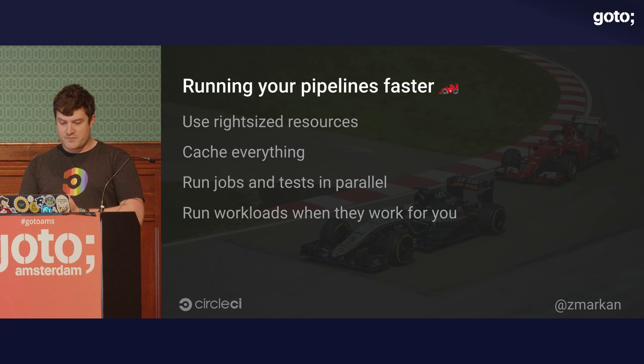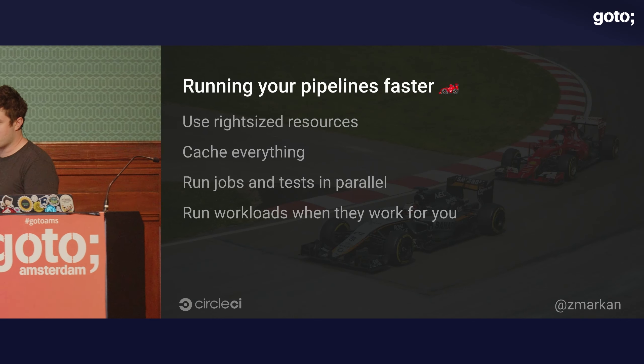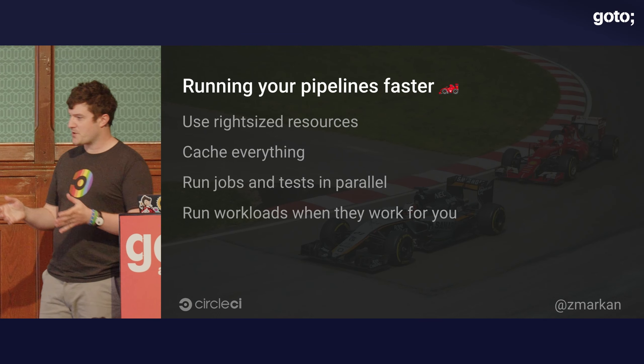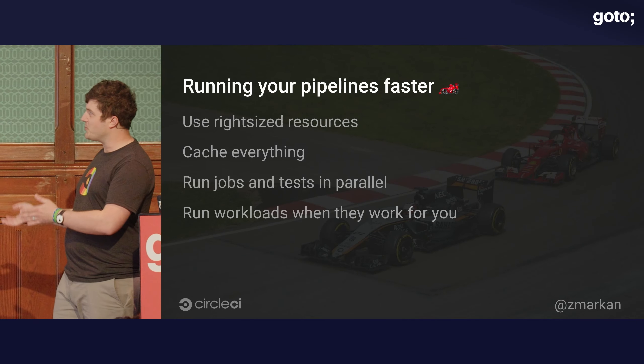Running things faster — the most obvious of the dimensions. First tip: use the resources that make sense for your builds. If you have a compilation step that can utilize multiple CPU threads — like a Gradle or Kotlin project with multiple modules — giving it more resources will result in things running faster. The same with tests, the same with everything. Same with RAM: if you're running into out-of-memory errors, think about increasing your RAM. If you're on a cloud-based tool, that's like a one-line change. I would encourage you to experiment with that.